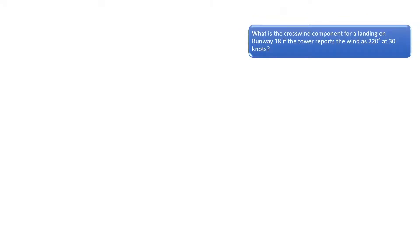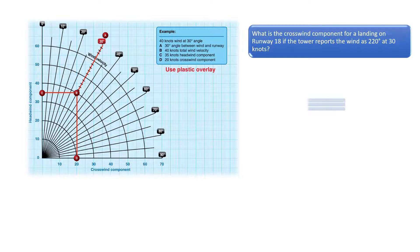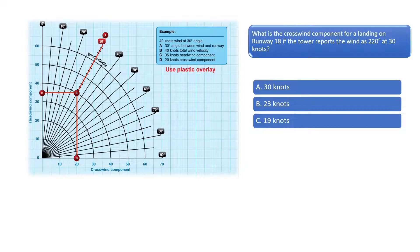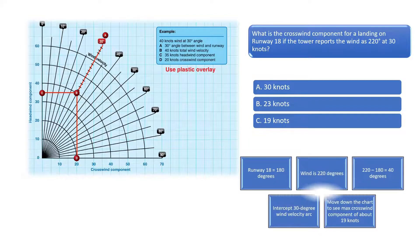What is the crosswind component for a landing on runway 18 if the tower reports the wind as 220 degrees at 30 knots? To answer this question, we need to subtract the wind direction of 220 degrees from the runway heading of 180 degrees.